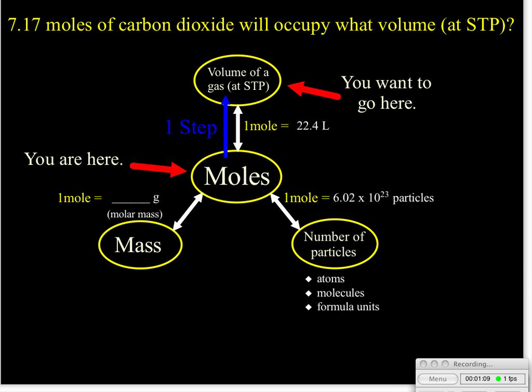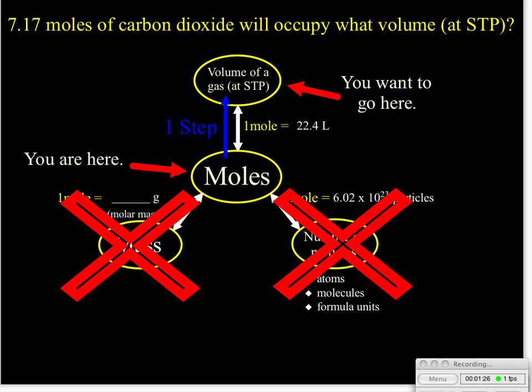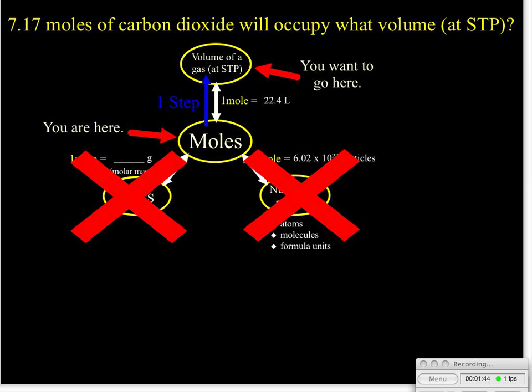We just have one step to do on this one, just one dimensional analysis conversion factor. And please note what we won't be worrying about. We won't be worrying about the molar mass, so we don't have to calculate a molar mass for carbon dioxide. We also are not really interested in how many individual molecules we have, so we won't be using 6.02 times 10 to the 23rd. The only relationship we'll be using is that one mole of a gas at STP occupies a volume of 22.4 liters.